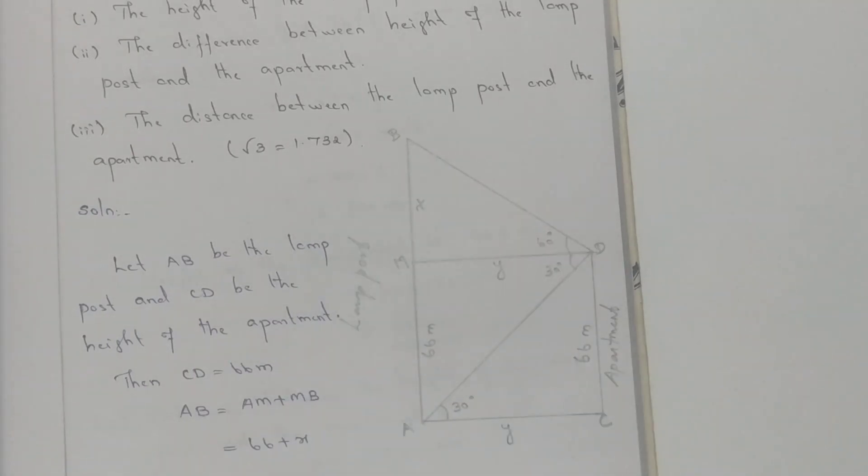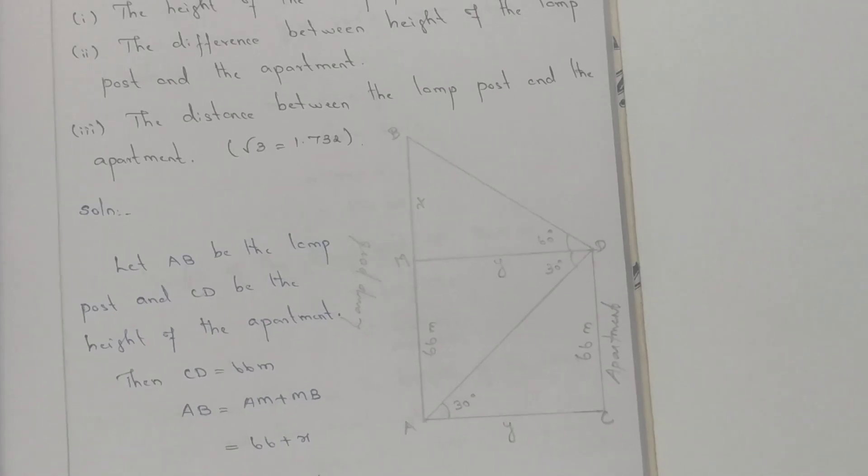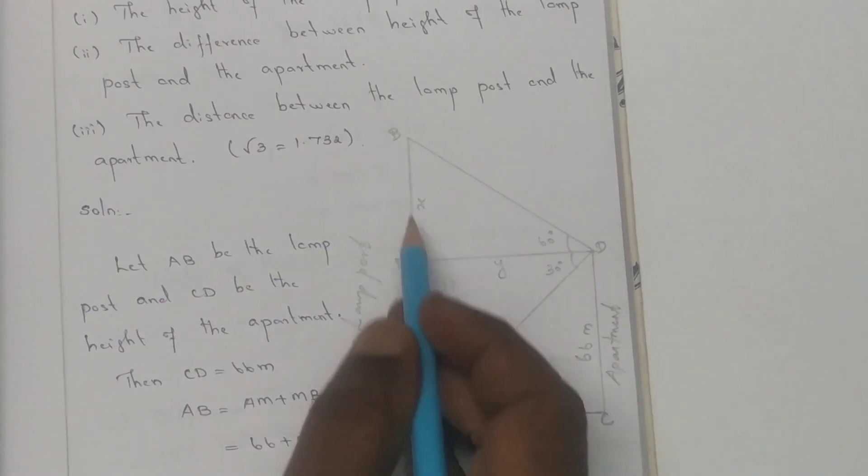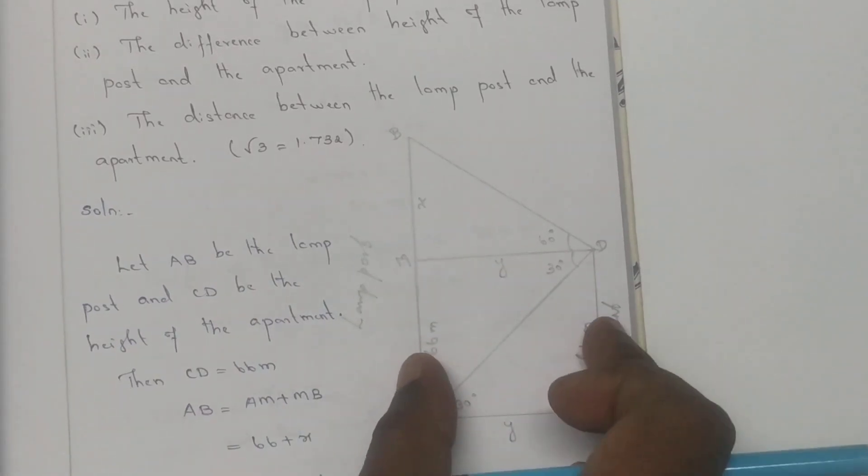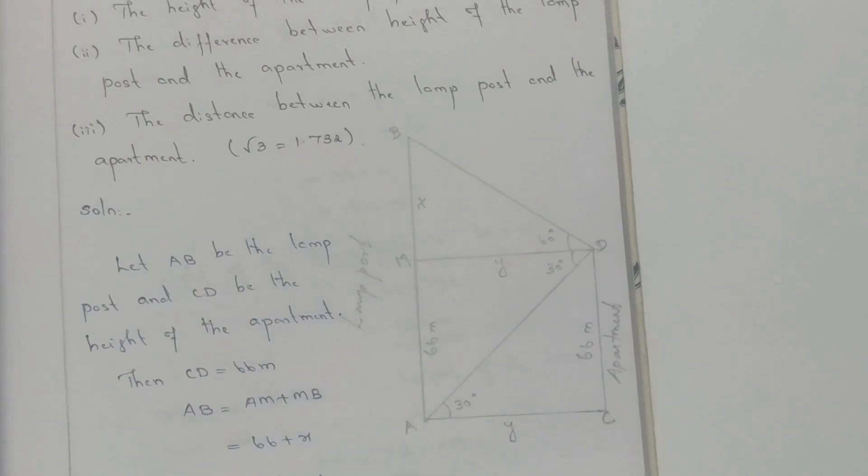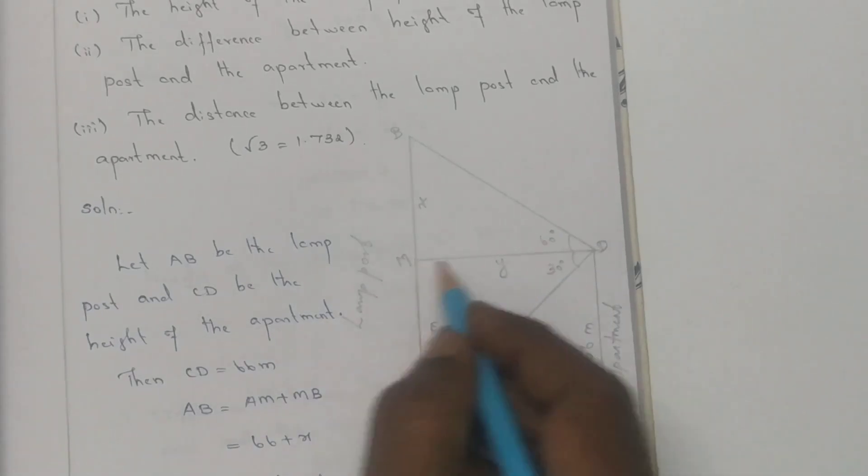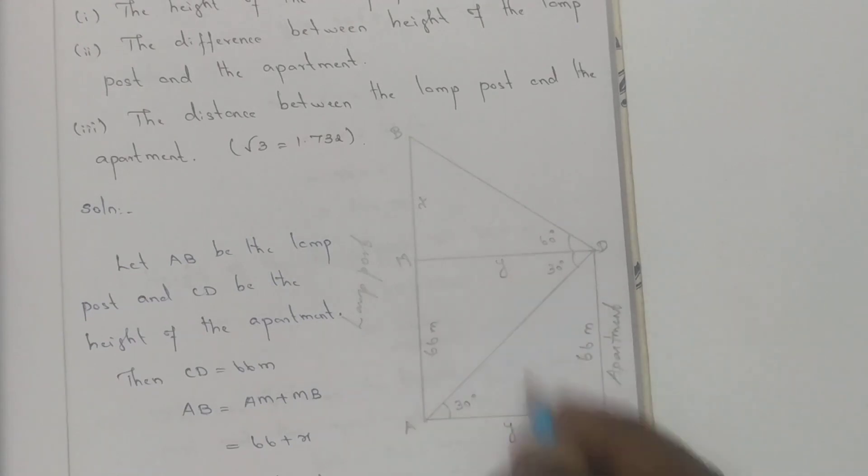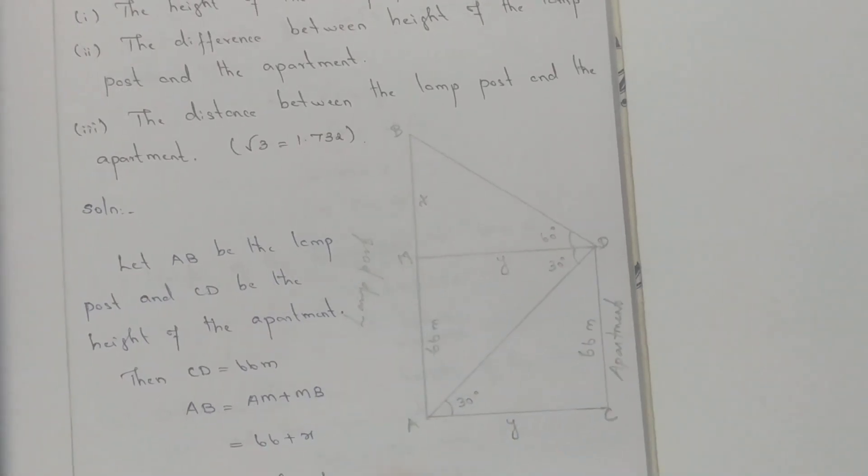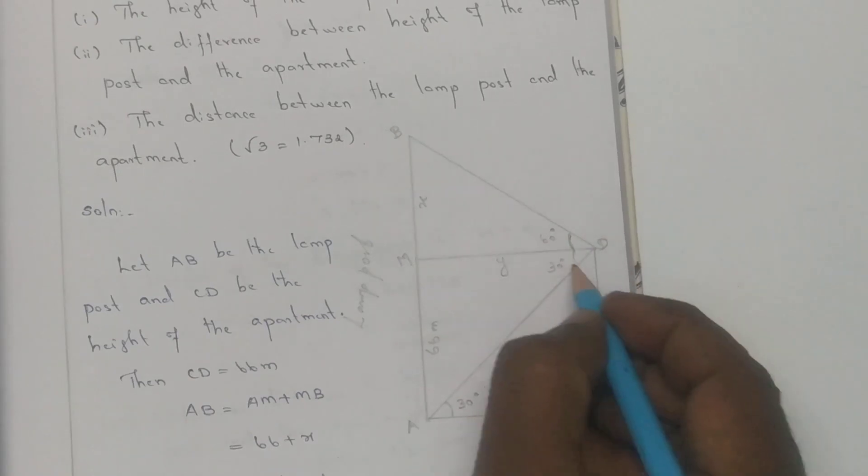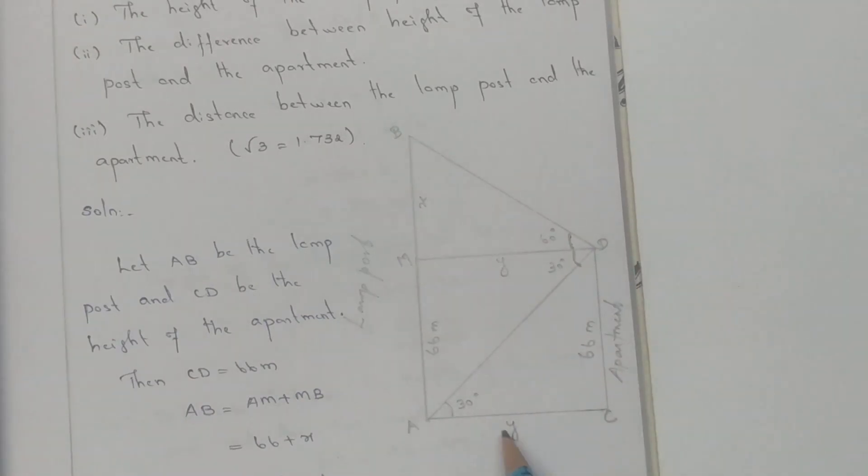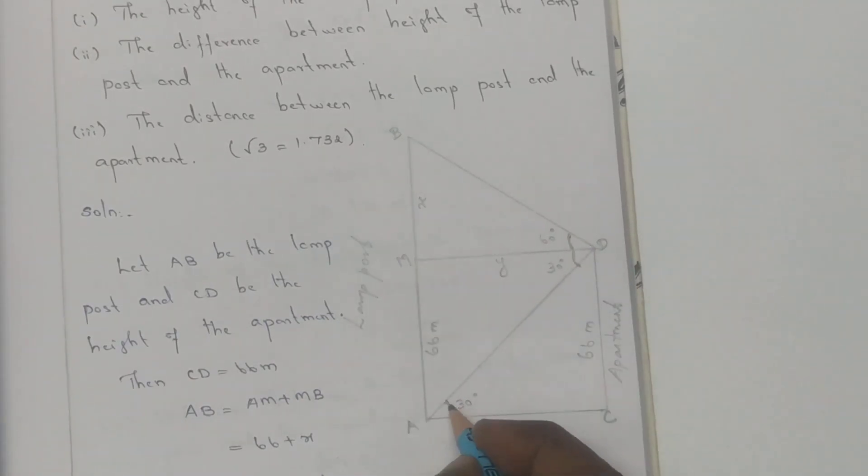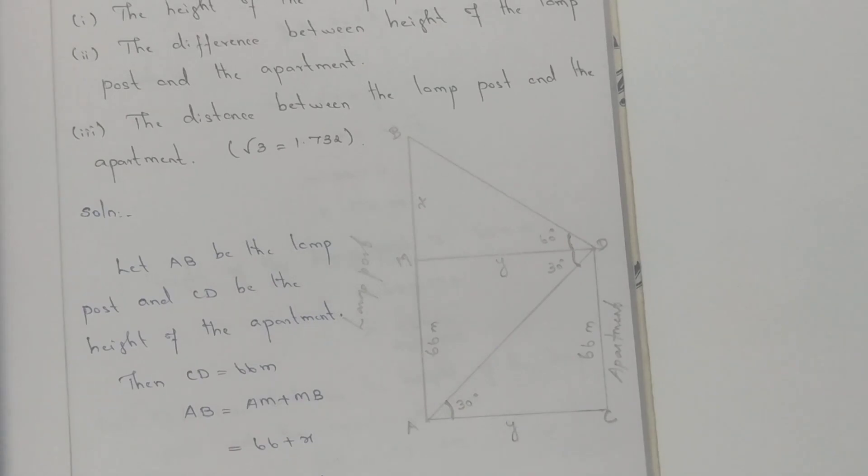The second part asks for the difference between the heights of the lamp post and apartment. The third part asks for the distance between the lamp post and the apartment. Let Y be the horizontal distance between them.